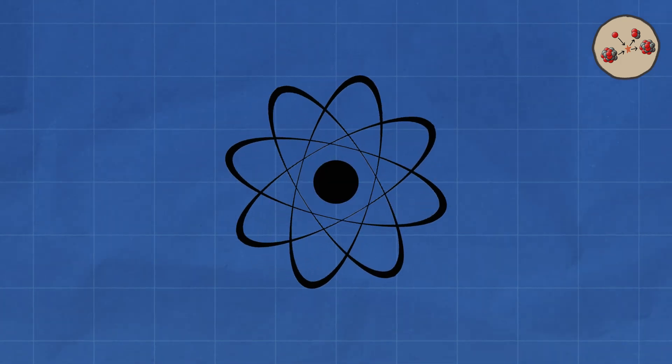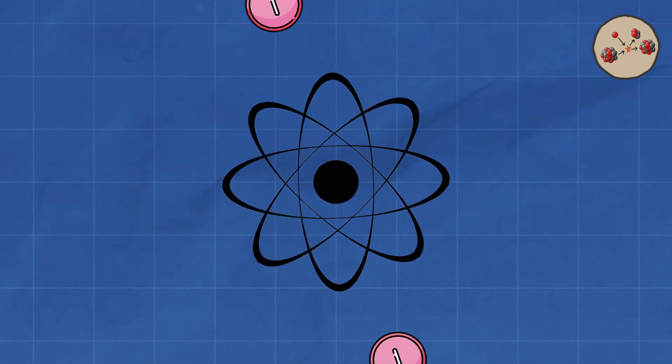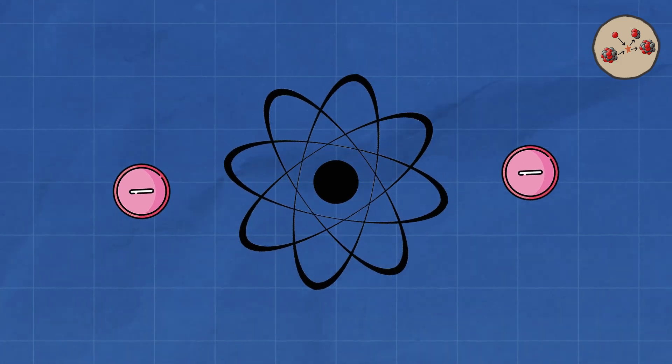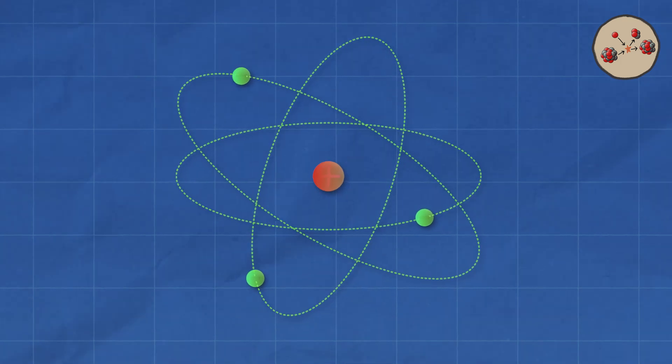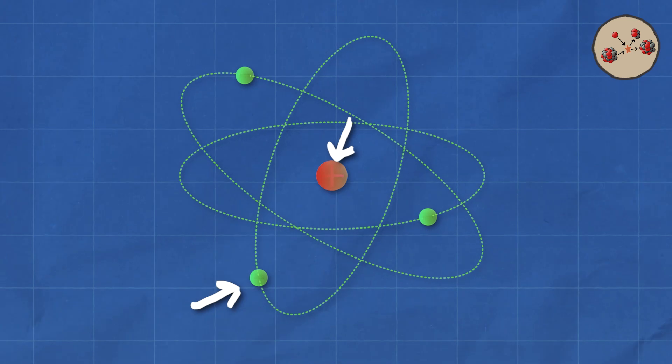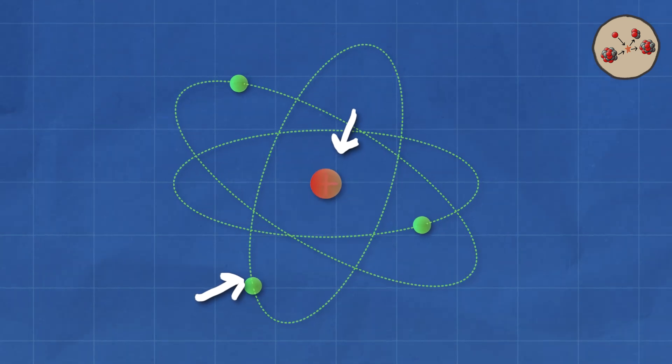Imagine the atom as a solar system, with the nucleus being the sun and various planets, the electrons, whirling around it. The nucleus is made up of protons and neutrons, held together by the strong nuclear force, one of the four fundamental forces in the universe.